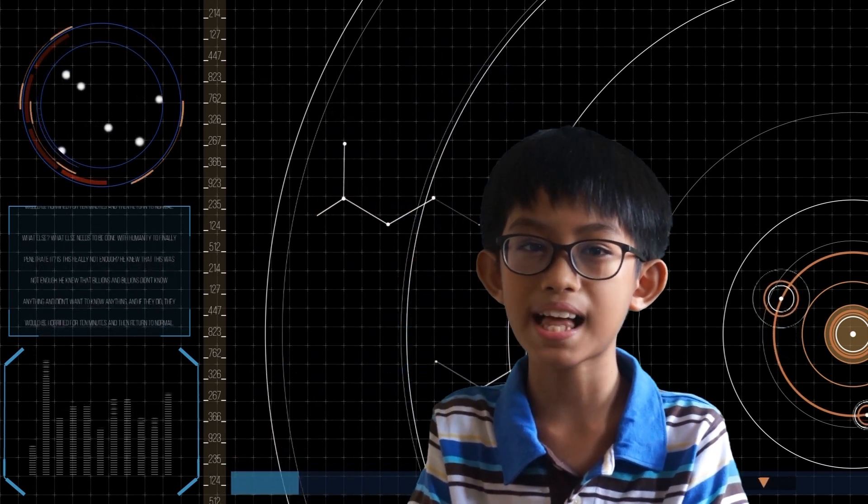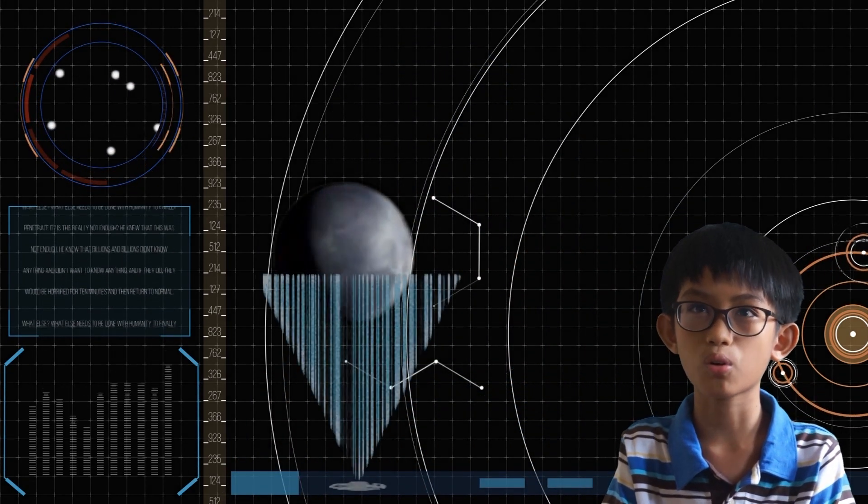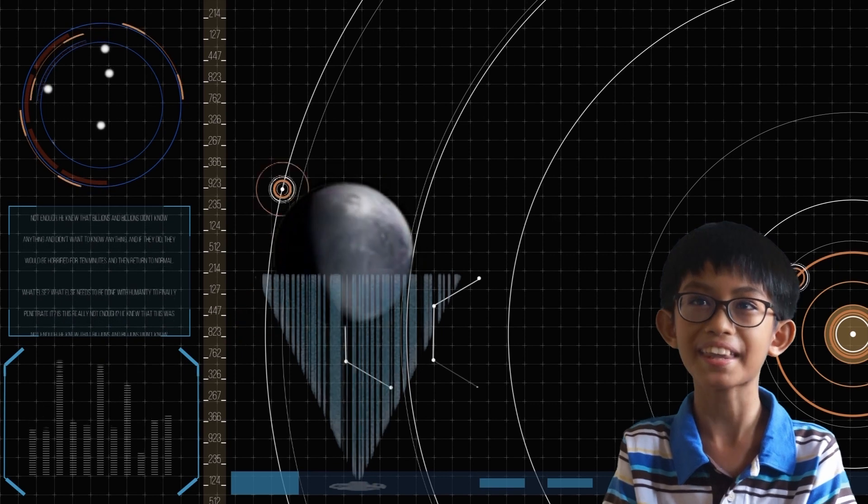Pluto is the ninth planet from the Sun. It is the coldest and the smallest planet.